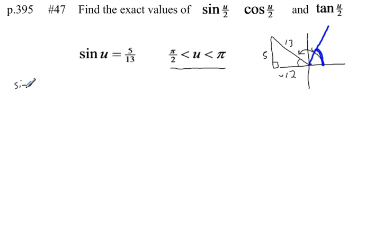What I want to do is use my half angle formulas. So I'm going to write the sine of u over 2 equals, and the formula is plus or minus the square root of 1 minus the cosine of u all over 2. Well, cosine of u we can find from our triangle. Cosine is adjacent over hypotenuse.